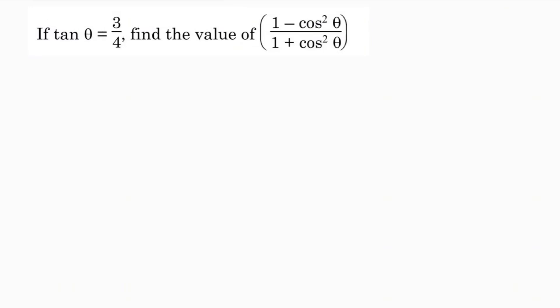If tan θ equals 3/4, find the value of (1-cos²θ)/(1+cos²θ). Since tan θ is 3/4, tan θ is the ratio of opposite to adjacent.